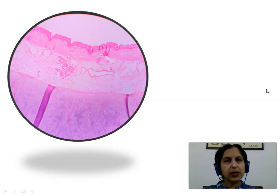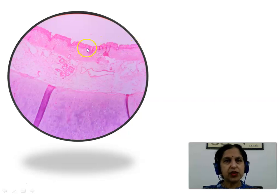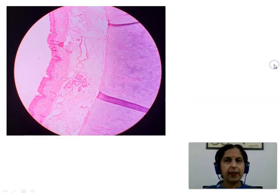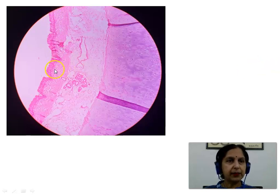Here is a low-power field view of the slide of trachea showing the luminal surface. We see the lining epithelium of the mucosa — pseudostratified ciliated columnar epithelium with goblet cells — the lamina propria, the submucosa with mucus glands with serous demilunes, and the hyaline cartilage. Another view of the same slide shows the lining epithelium, mucosa, lamina propria, submucosa with glands, and hyaline cartilage.